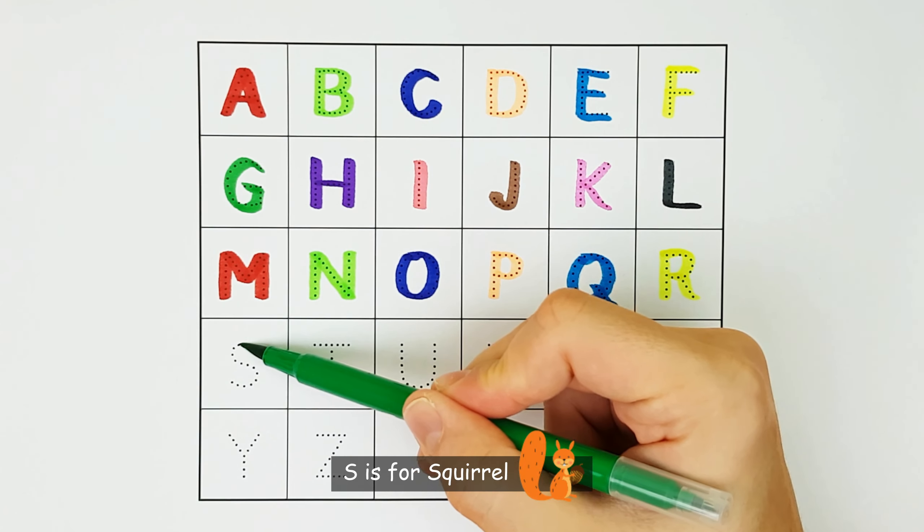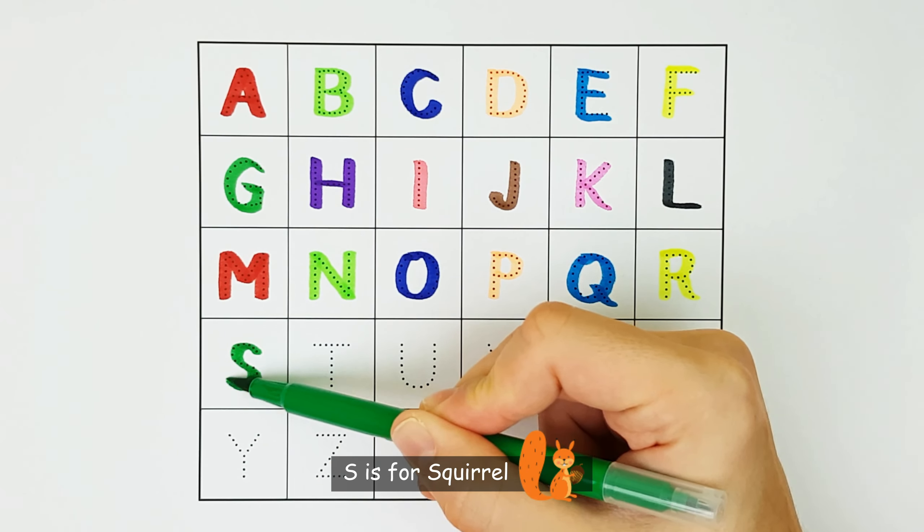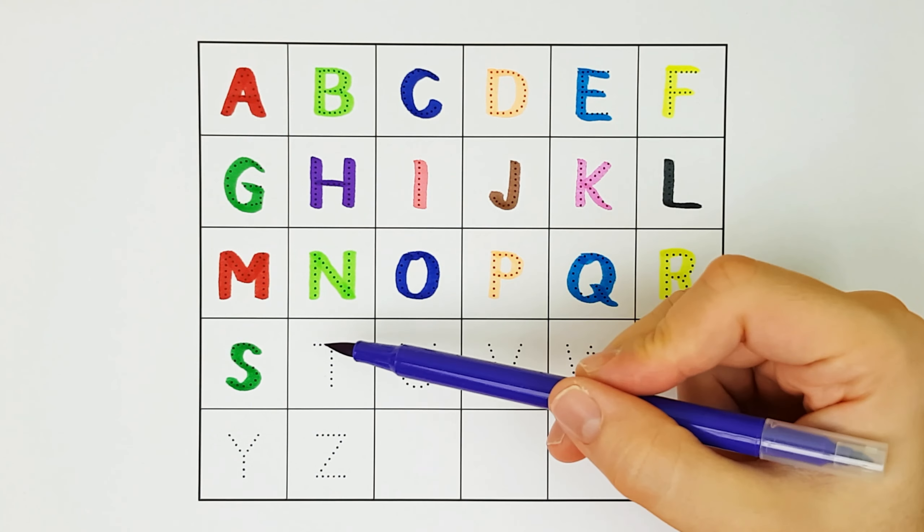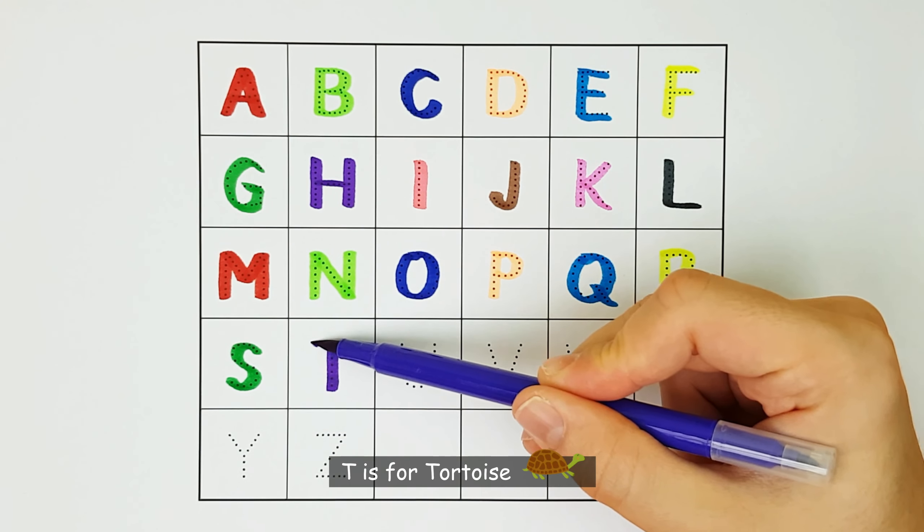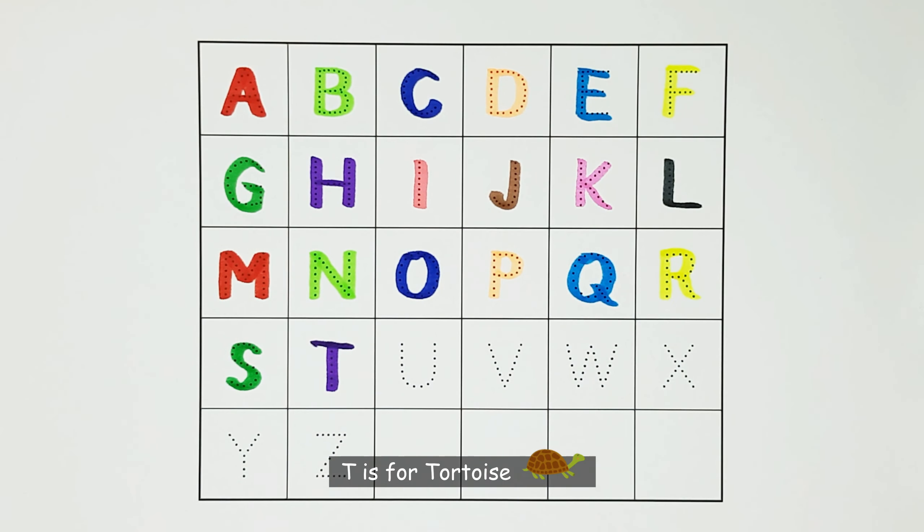A. A is for albatross. A. B. B is for bear. B. C. C is for crab. C.